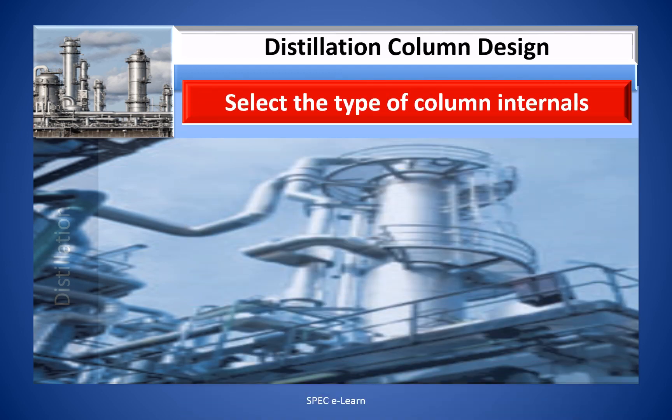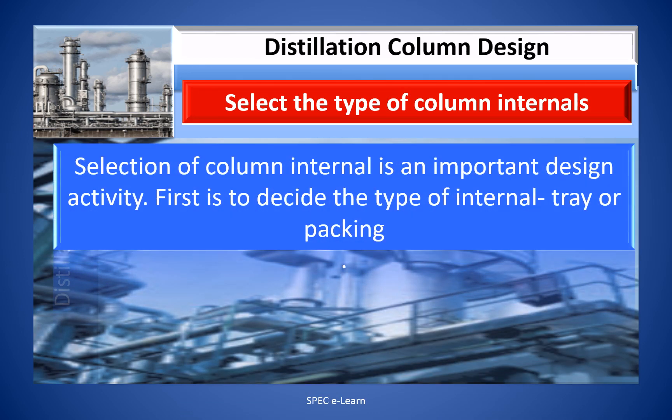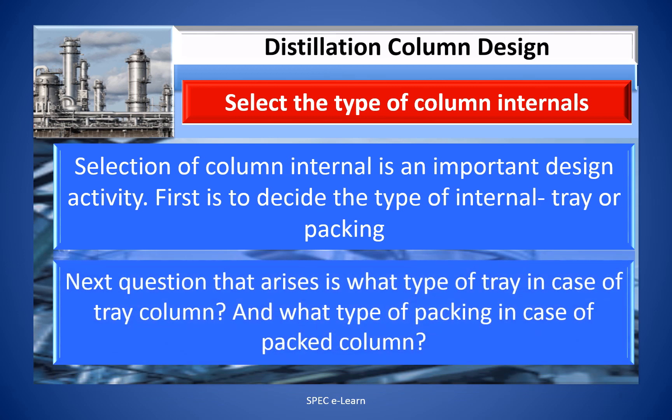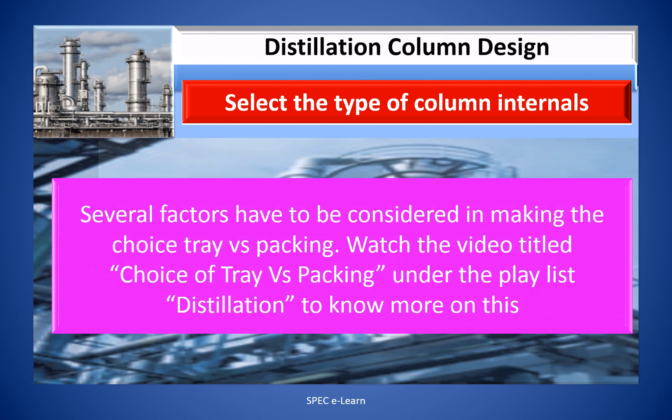Selection of column internals is an important design activity. First is to decide the type of internals: tray or packing. The next question is what type of tray in case of a tray column, and what type of packing in case of a packed column. Several factors are to be considered in making this choice. Watch the video titled 'The Choice of Tray versus Packing' under the playlist Distillation to know more on this.